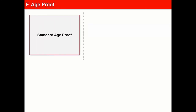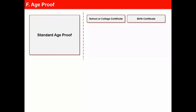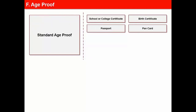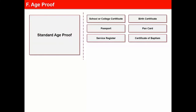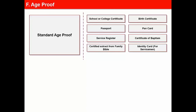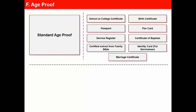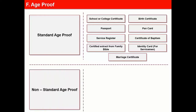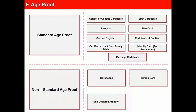Some documents considered as standard age proofs are: school or college certificate, birth certificate extracted from municipal records, passport, bank card, service register, certificate of baptism, certified extract from a family Bible if it contains the date of birth, identity card in case of defense personnel, or marriage certificate issued by a Roman Catholic Church. When standard age proofs are not available, the life insurer may allow submission of a non-standard age proof like horoscope, ration card, affidavit by way of self-declaration, or certificate from village panchayat.